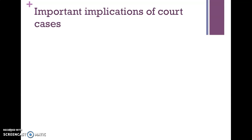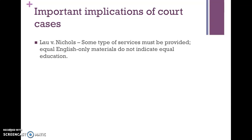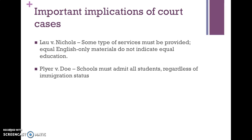There are some important implications of these court cases for our schools today. From Lau versus Nichols: school districts have got to do something — some type of services must be provided. Giving students the same English-only materials as English-speaking students does not indicate equal instruction. You cannot do nothing. Plyer versus Doe from the 80s found that schools must admit all students regardless of immigration status. The Texas Legislature had passed a law saying they wouldn't educate undocumented students, but the court found it was in everybody's best interest for everybody to be in school. It's not the school's job to ask for immigration status.